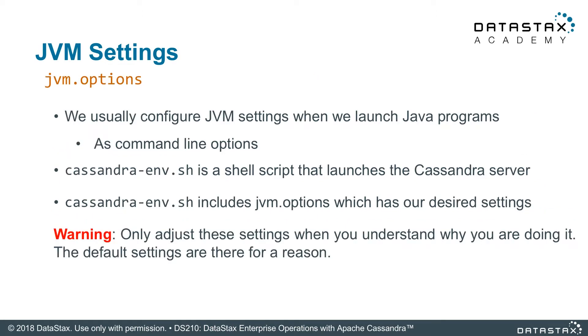The JVM.options file is where you tune how your virtual machine behaves. It's basically a set of default command line options for when DataStax Enterprise begins execution. When you start DataStax Enterprise, the Cassandra environment shell file includes all these options for you. Obviously, don't tweak these values if you're unfamiliar with what they do. The default values are a safe place to start if you are unsure of what values you should use.